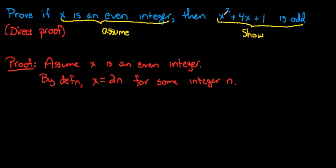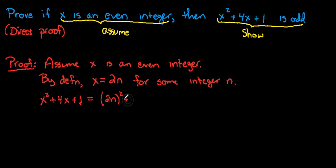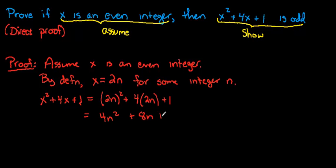So let's plug that in. This implies that x squared plus 4x plus 1 equals, plugging in our 2n, we've got (2n) squared plus 4 times 2n plus 1. Working that out, we get 4n squared plus 8n plus 1.